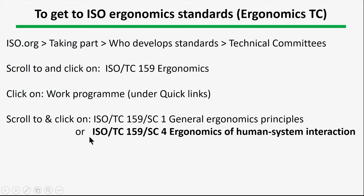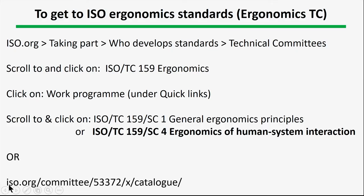Scroll down to the appropriate technical committee — either subcommittee 1, or most of the activities for this topic have to do with subcommittee 4, ergonomics of human-system interaction. You might be able to get there by Googling directly, but it's not 100% certain. The direct link is ISO.org/committee/53372/x/catalog, with 'catalog' in British spelling.